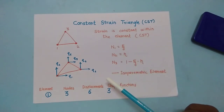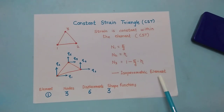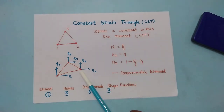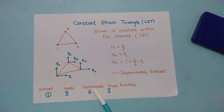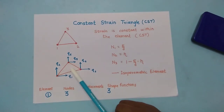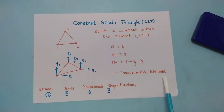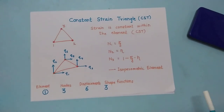The constant strain triangle is also called an isoparametric element. This means we use the same shape functions to define both the geometry and the field variables — that is, displacement. The same formula is used to find the displacement within the element as well as its x and y coordinates. That is why this triangular element is called an isoparametric element.